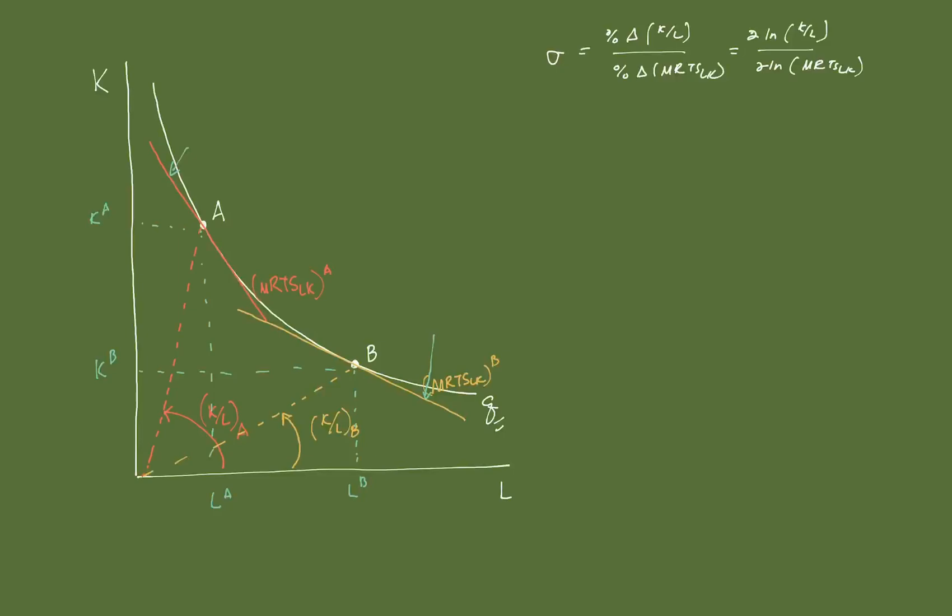Now, all we can notice here is that, first, sigma, which is your elasticity of substitution, is the ratio of these proportional changes, these proportional changes. And more importantly, sigma represents, or measures rather, measures the curvature, the curvature of an isoquant.